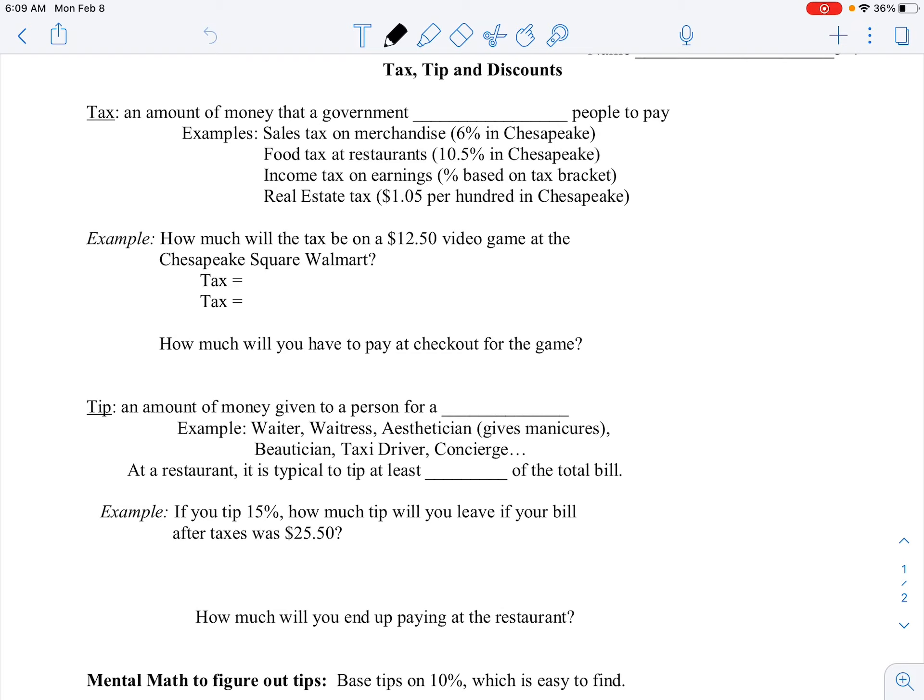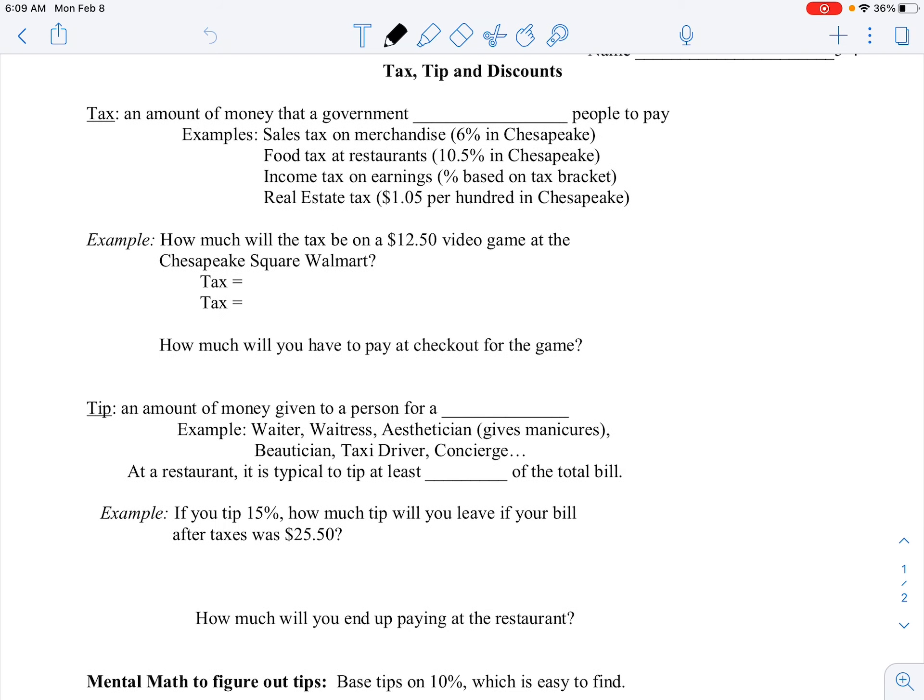First we're going to define tax. That is an amount of money that a government requires people to pay. Sales tax is different everywhere you go depending on the county you're in. In Chesapeake it's six percent.